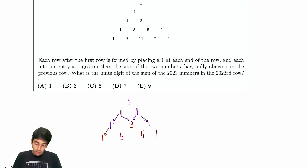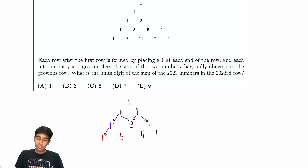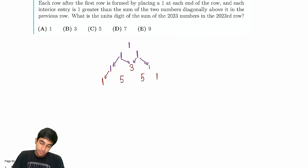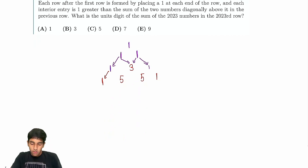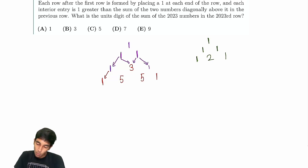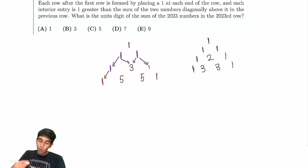So we're asked to find the units digit of the sum of the 2023 numbers in the 2023rd row. We'll just find the sum and find the units digit later. So what is the sum? Imagine this was just Pascal's triangle — none of this trickery. You just always add the previous two elements and then move the 1 out. How could we find it?